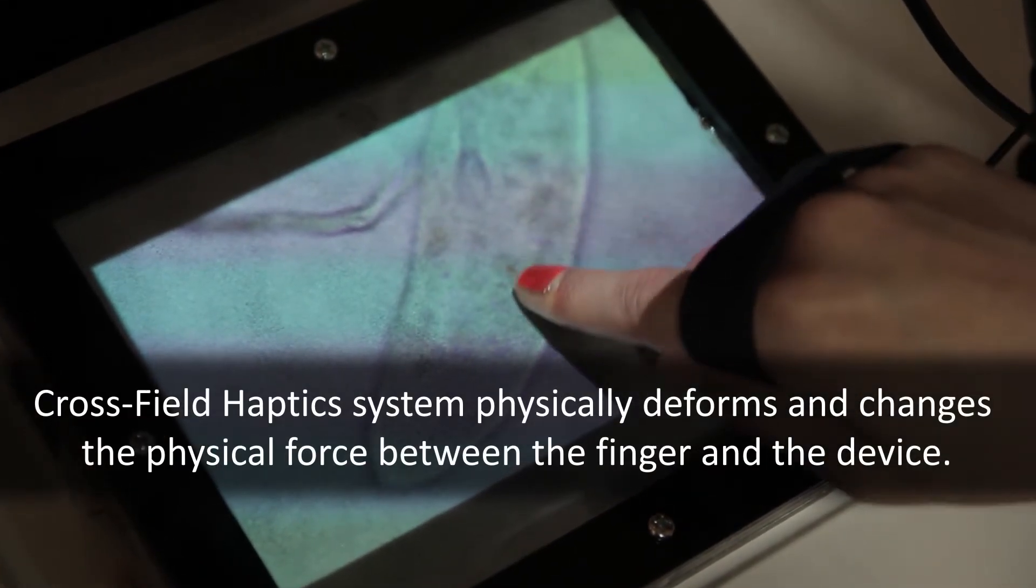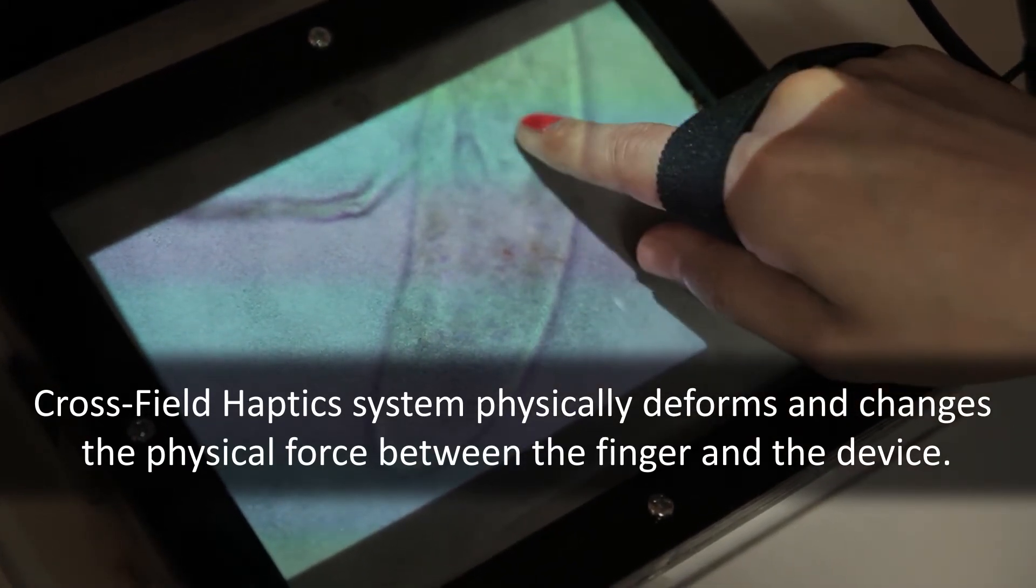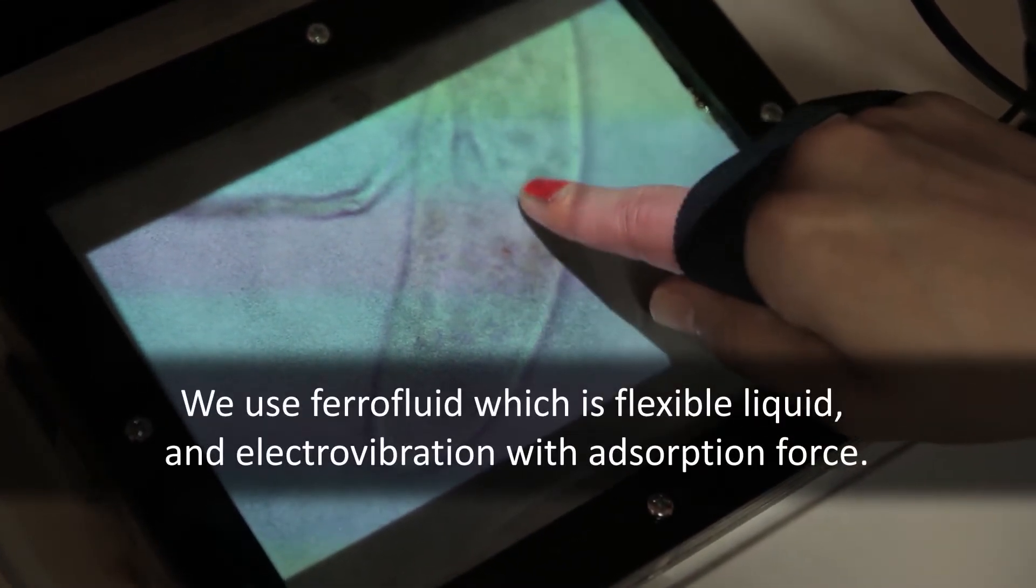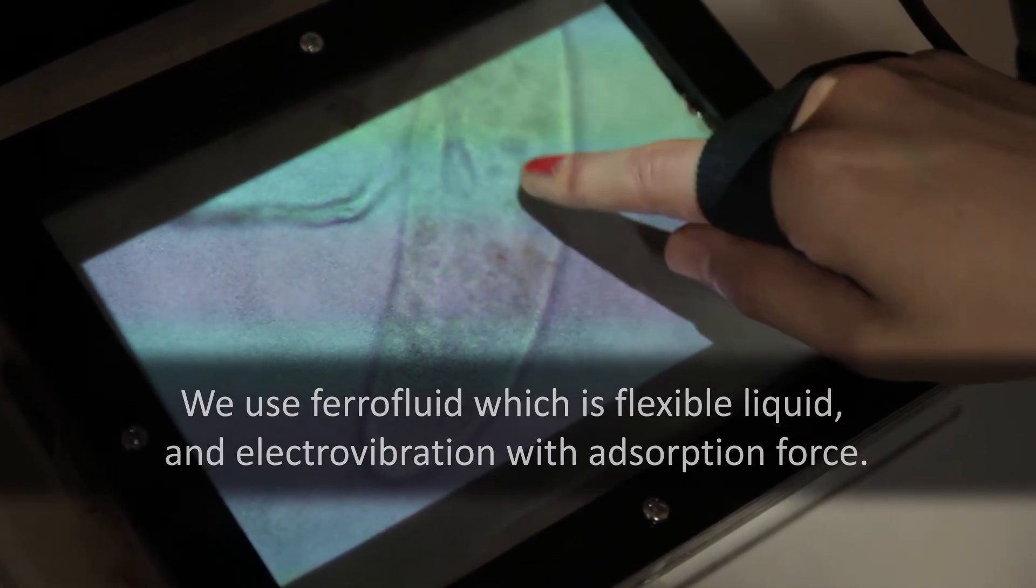The cross-field haptics system physically deforms and changes the physical force between the finger and the device. We use ferrofluid, which is a flexible liquid, and electrovibration with absorption force.